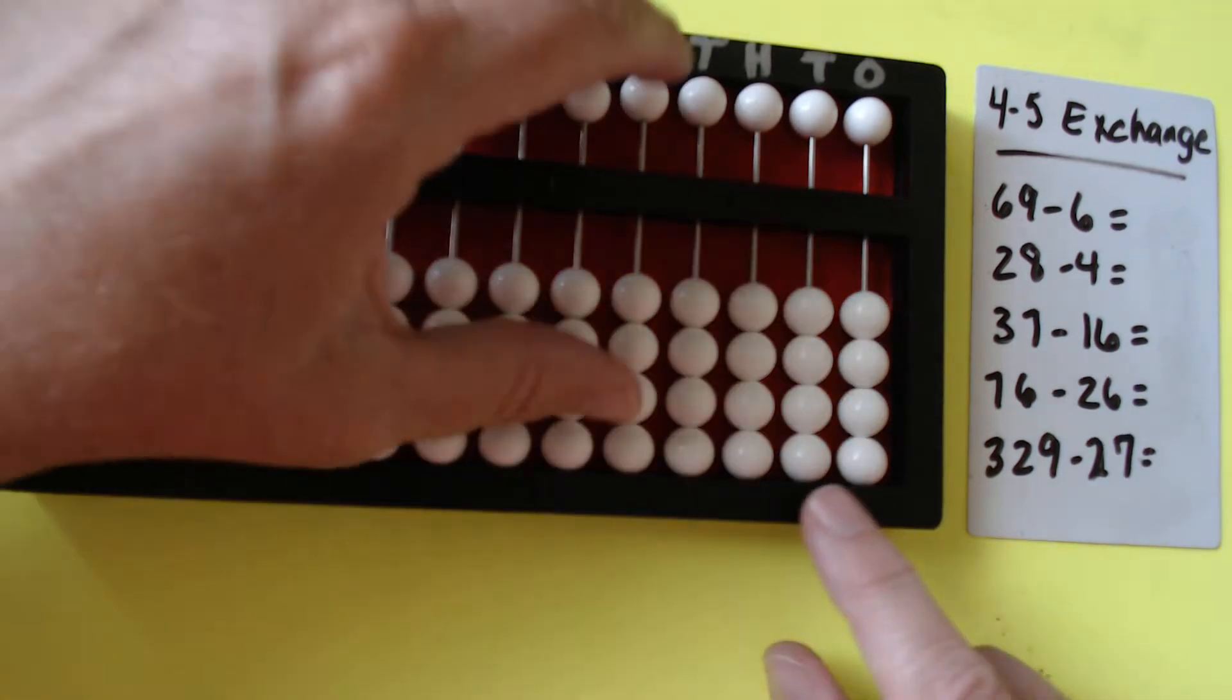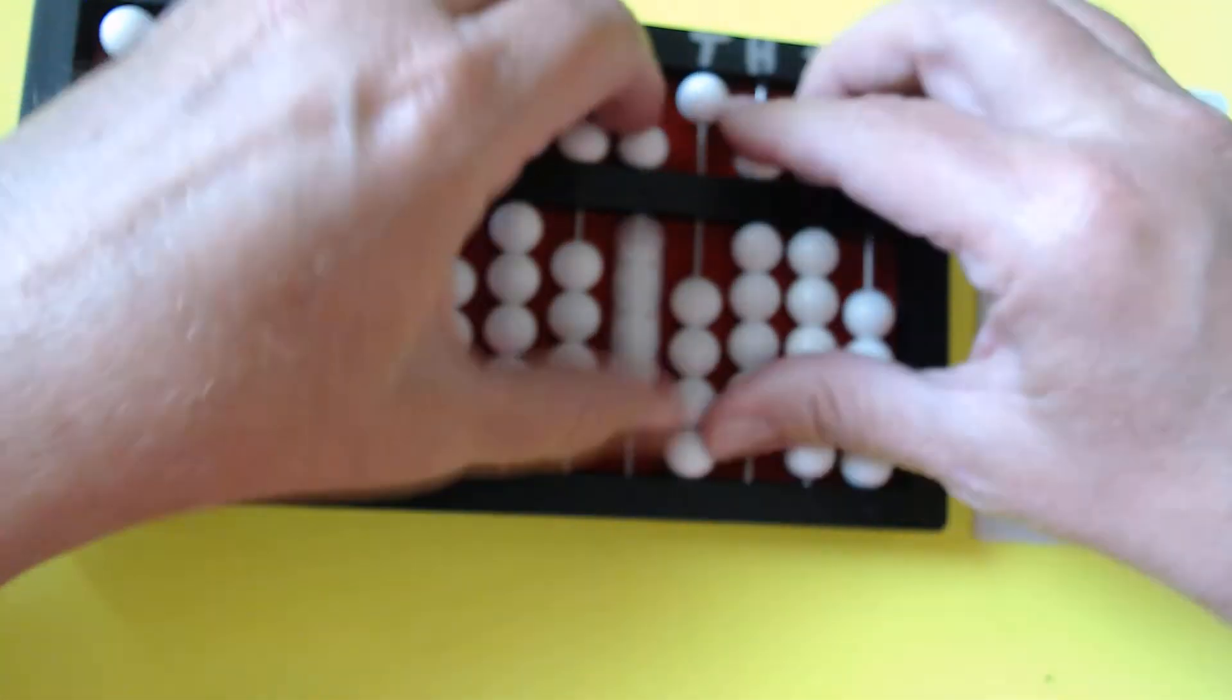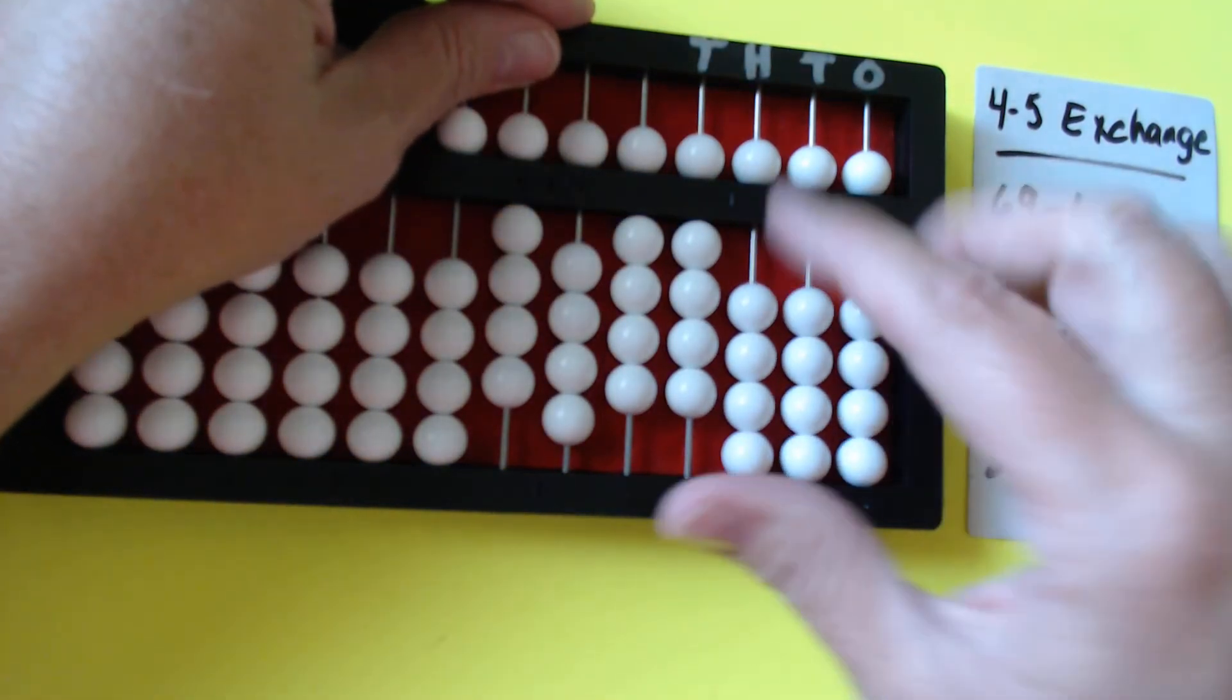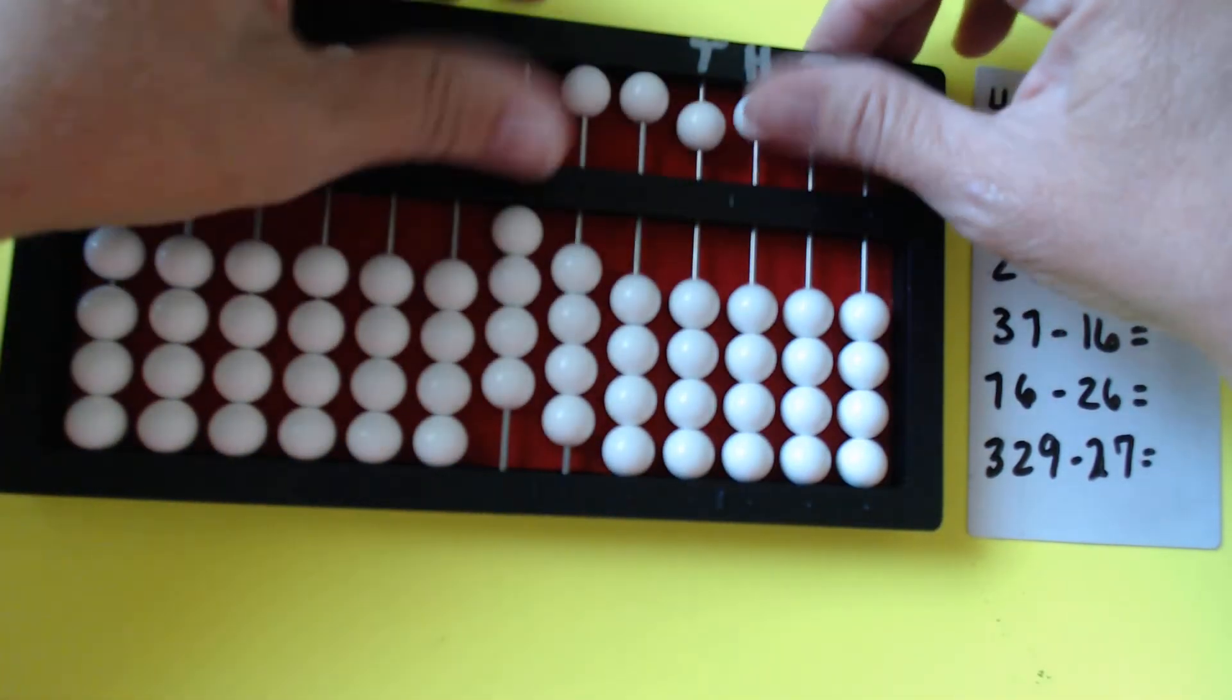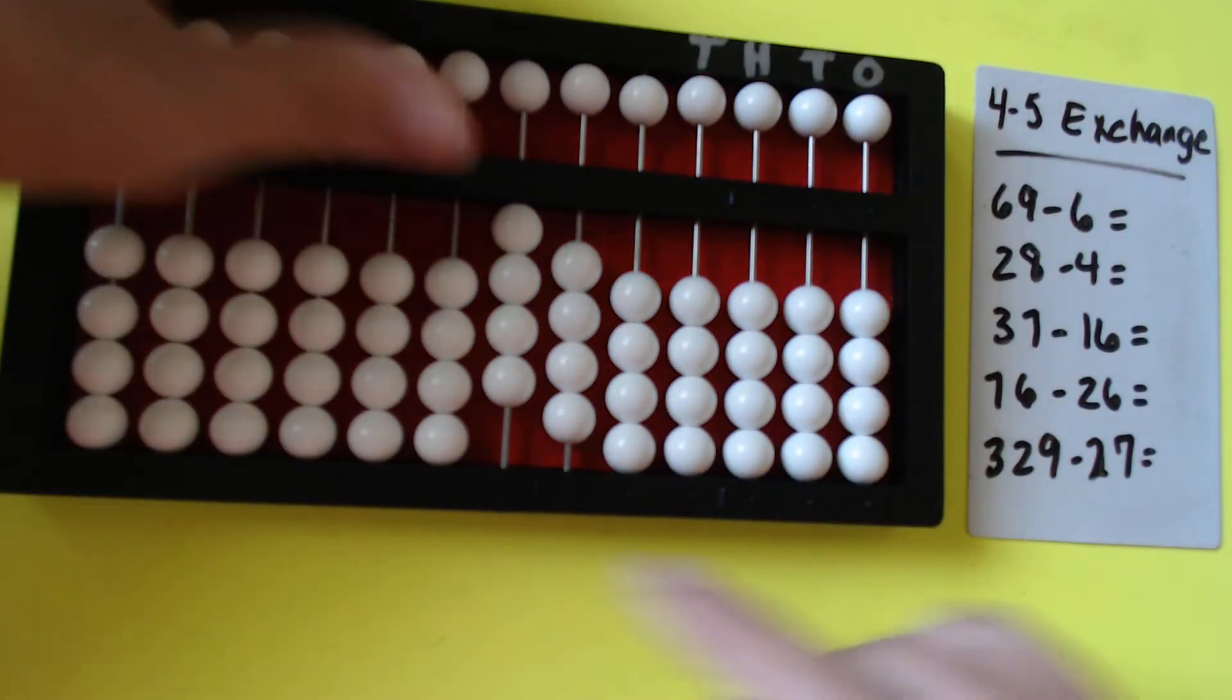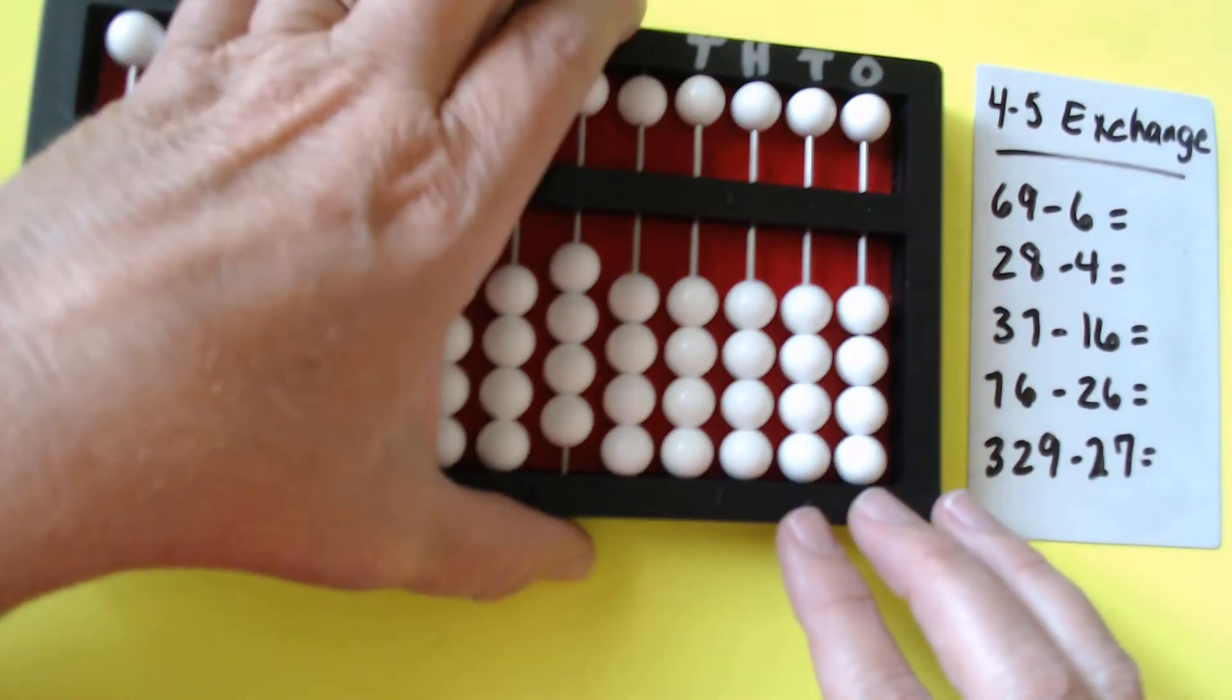Just to review, whenever we are adding, we are pushing towards the counting bar, the horizontal bar, but when we're subtracting, we're pulling away from. And again, our place value: ones, tens, hundreds, thousands, ten thousands, and so forth. But we will be over here for this video.